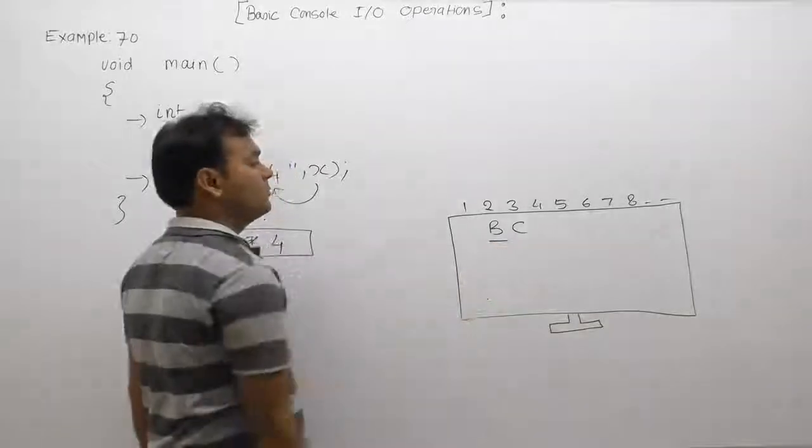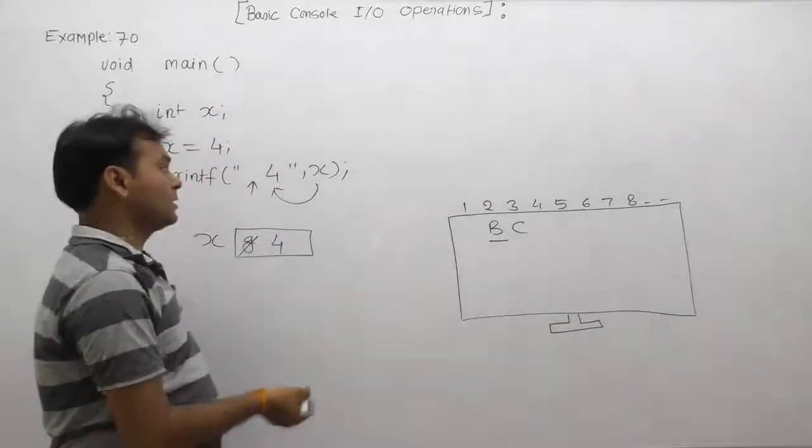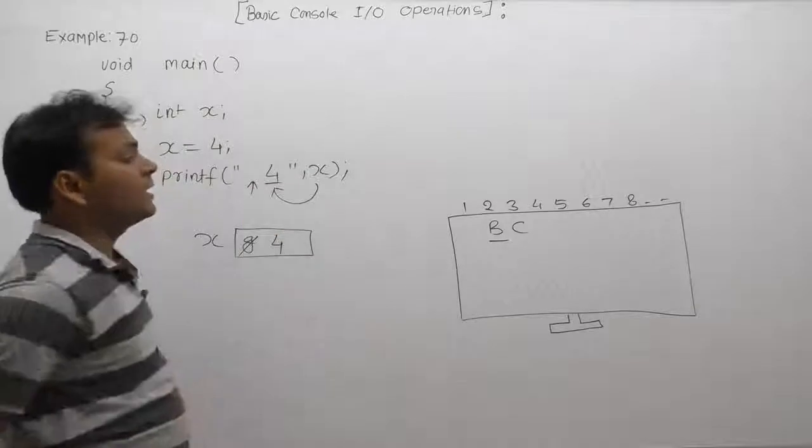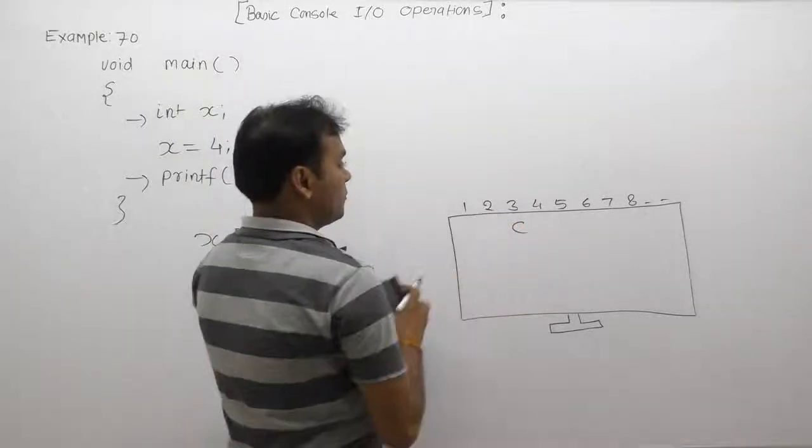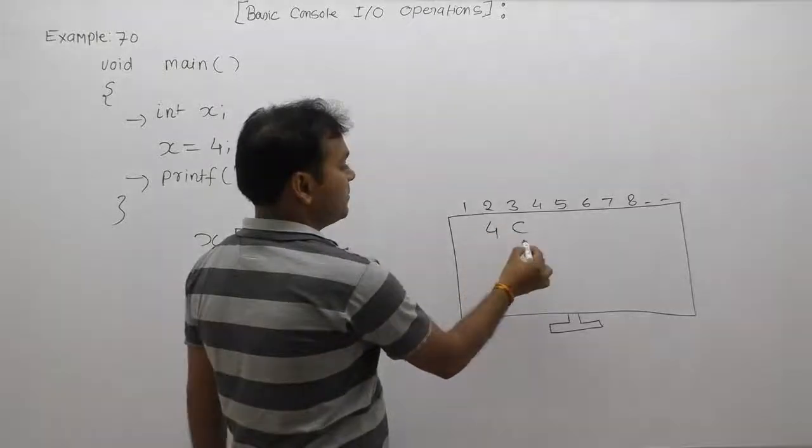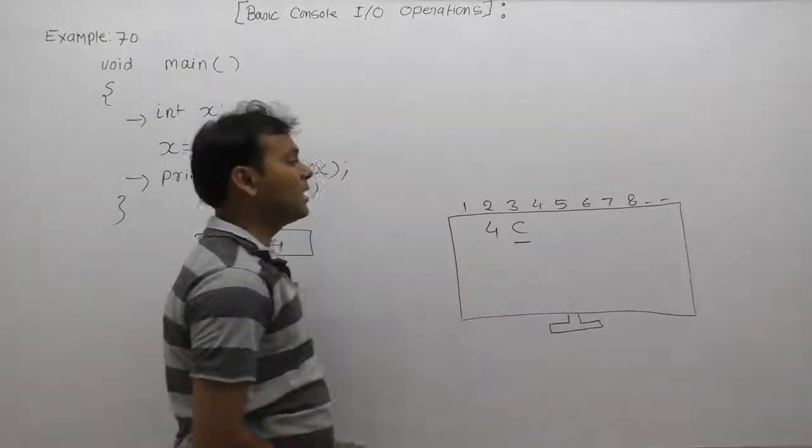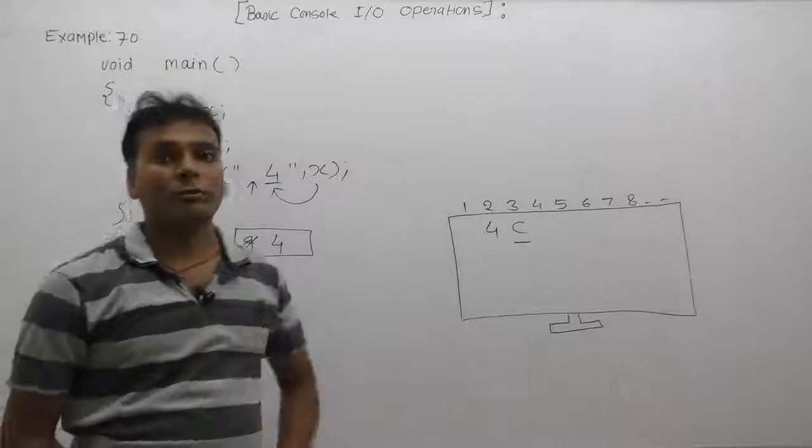And next character's place, again replace current value as four. Then cursor will be available inside C. This is the final output of the given program.